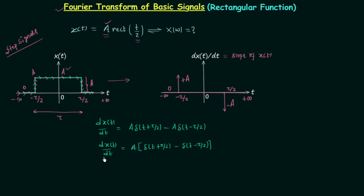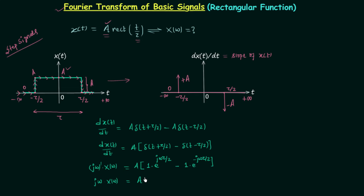Now we apply the Fourier transform to both sides. On the left hand side we get j omega times X(omega), where X(omega) is the Fourier transform of x(t). On the right hand side, the Fourier transform of delta(t) equals 1, but we have delta(t plus tau by 2), so using the time shifting property this becomes e to the power j omega tau by 2. Similarly the second term gives e to the power minus j omega tau by 2.